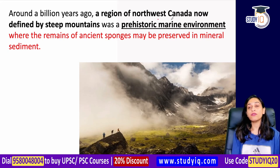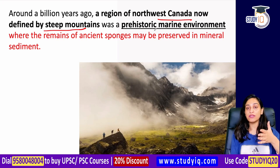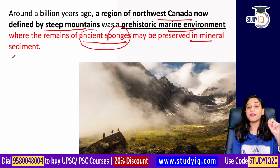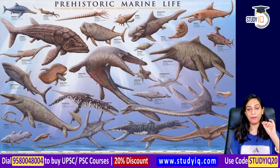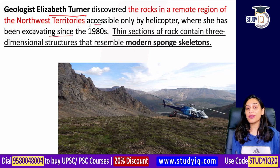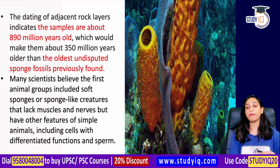The region of northwest Canada, now defined by steep mountains, was once a marine environment in prehistoric times. Geologist Elizabeth Turner worked through the northwest territories, excavating rock samples in the 1980s using thin rock sections. These sections revealed what appear to be sponge skeletons. Samples from adjacent rock layers dated to around 890 million years old.